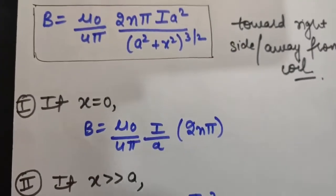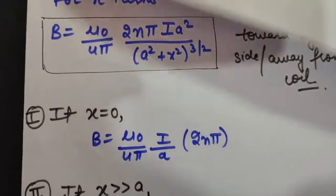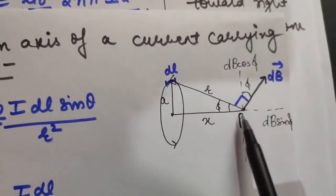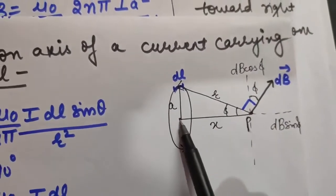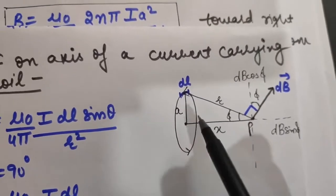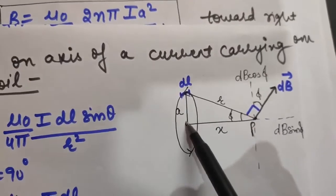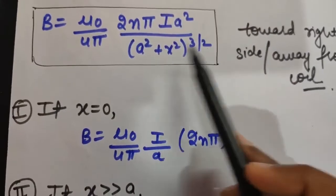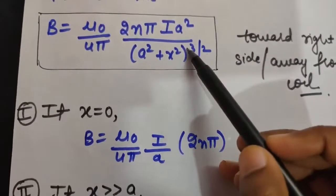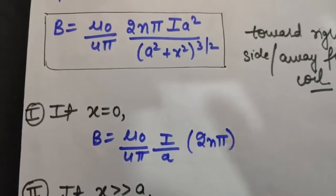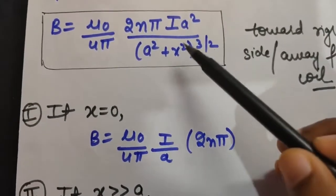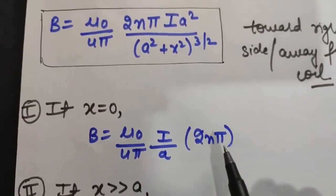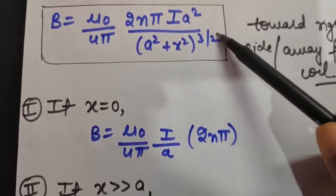For the special cases, look at the diagram again. First, if x = 0: that means the point is at the center, and the formula should match what we calculated for a coil when the point was at the center. Putting x = 0, A² to the power 3/2 gives A³, A³ cancels with A², and we get B = (μ₀/4π) × (I/A) × 2Nπ — the same as we calculated for the center of the coil. So our formula is correct.